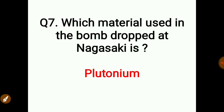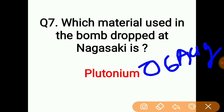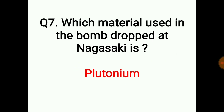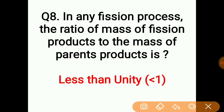The material used in the bomb dropped on Nagasaki is plutonium. In any fusion process, the ratio of the mass of fusion products to the mass of the parent product is less than unity.